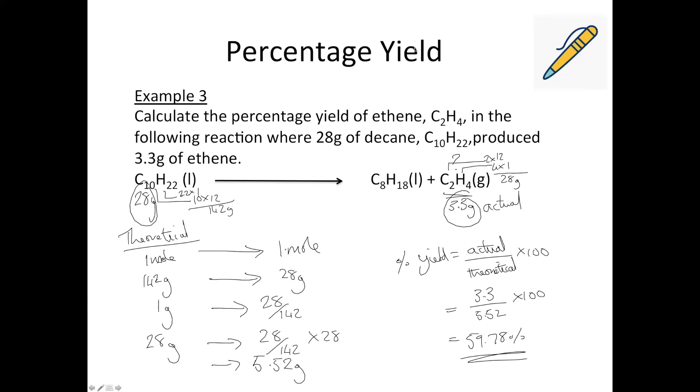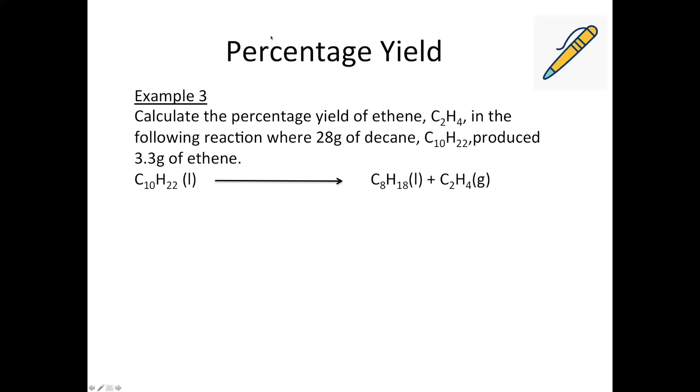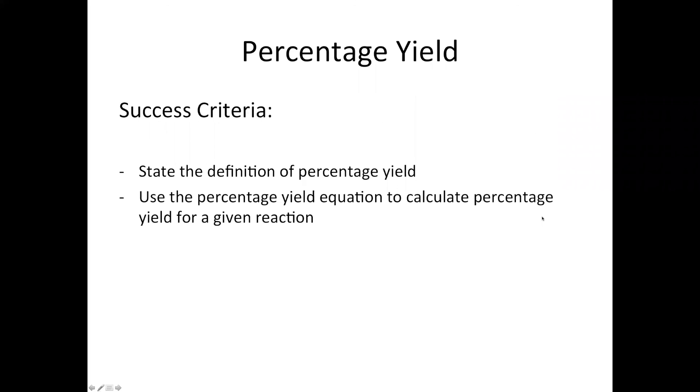So hopefully those few examples gave you a clear idea of how to carry out percentage yield calculation. And so hopefully now you have an idea of what percentage yield actually means, and you can calculate the potential for a specified product in our given chemical reaction. Thank you.